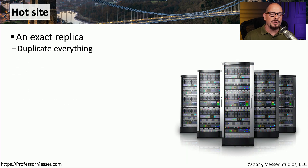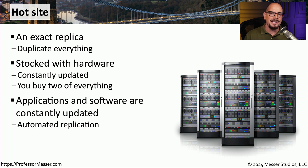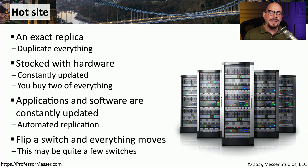If you need a disaster site where you could very easily move in and be up and running, you may want to consider a hot site. A hot site is an exact replica of your data center — or as exact as you can make it for a disaster recovery location. It has the same hardware you're currently using in your existing data center, and it's very common when purchasing new equipment for a data center to also purchase additional units for your hot site. Not only do we need equipment at the hot site, we also need our applications and data — it's very common to have replication systems or ongoing backups so the data at the hot site is as close to the data at your primary location. By putting all of this in place, we can move relatively quickly from the primary data center to the disaster recovery location without installing hardware, installing applications, or recovering data from backups.